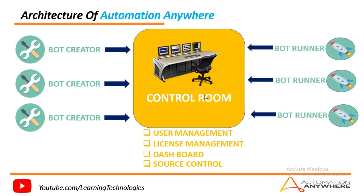Bot Runners are used to execute the bots. Multiple bots can be executed in parallel and cannot update, create, or modify automation. They are runtime clients installed on Windows machines and report back execution log status to the Control Room. Bots can run in attended or unattended mode, with bot runtime systems sitting on desktops, virtual machines, data centers, or cloud.